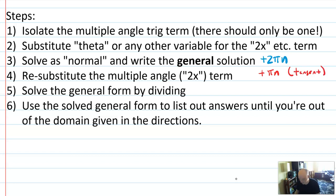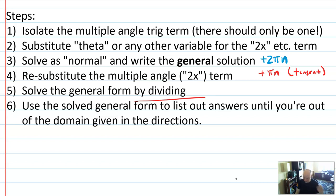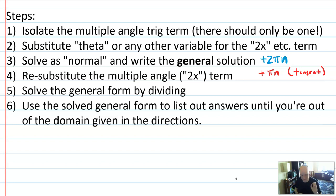We have a tangent example later to talk about. After you've solved it, resubstitute the 2x term, then solve by dividing by the coefficient — in the last case, 2, but divide by whatever the coefficient is. Then use that solved general form to list out answers with a table or chart until you've exceeded the domain 0 to 2π. That's how you know you're done. Circle however many — 4, 8, 6 — answers. There's usually an even number.